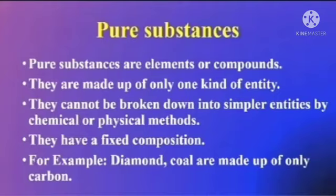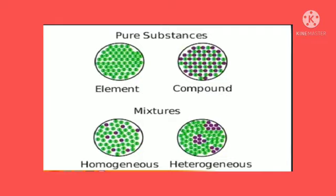Pure substances are elements or compounds. They are made up of only one kind of particle. They cannot be broken down into simpler particles by chemical or physical methods. They have a fixed composition. For example, diamond and coal are made up of only carbon.